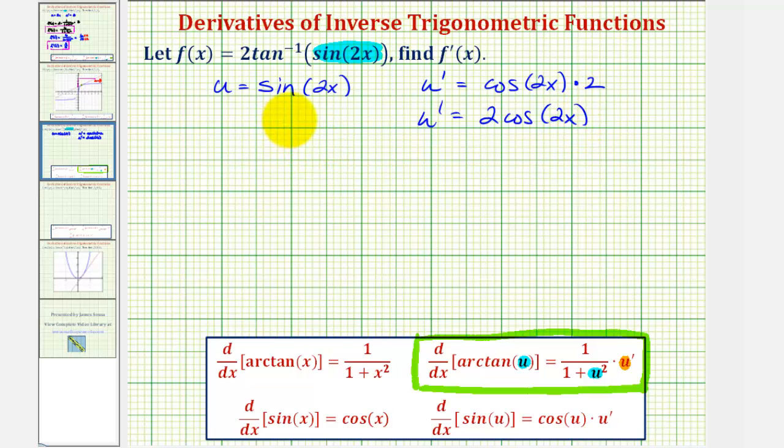Now that we've identified u and u prime, we can now just find the derivative of two times inverse tangent u with respect to x using our derivative formula here.